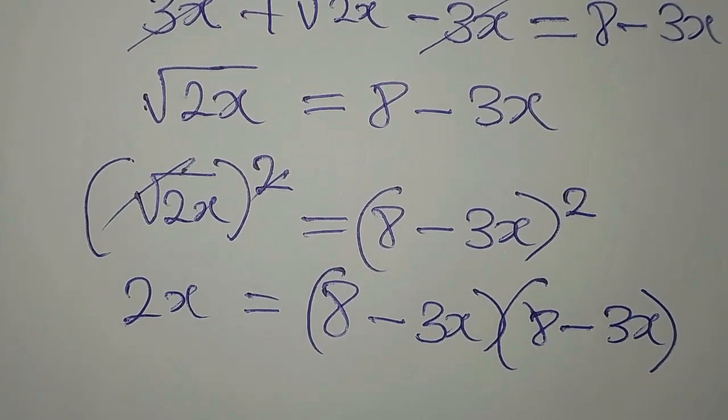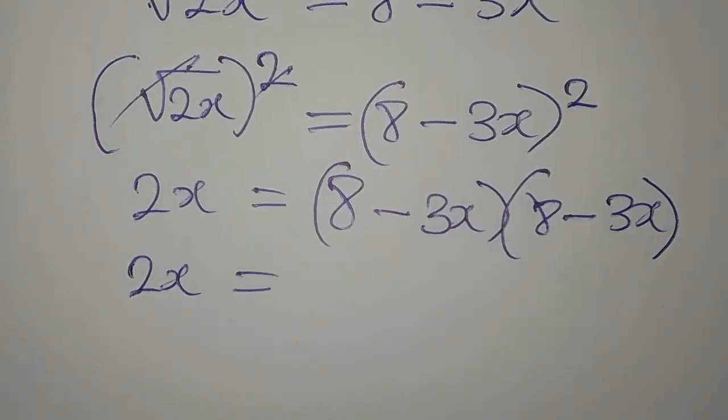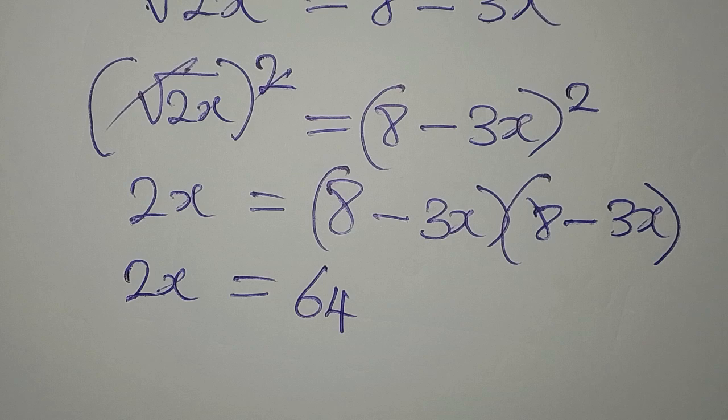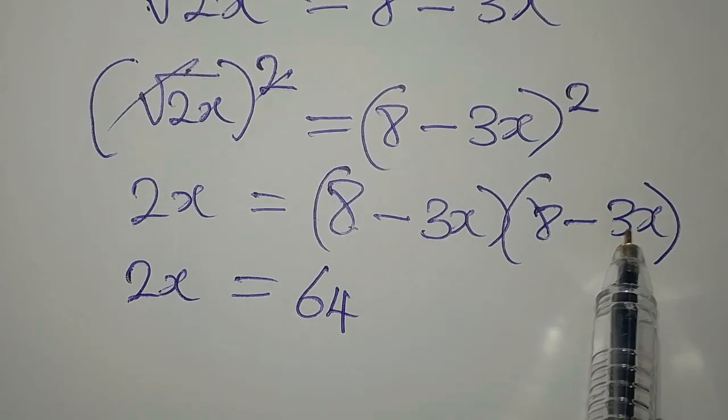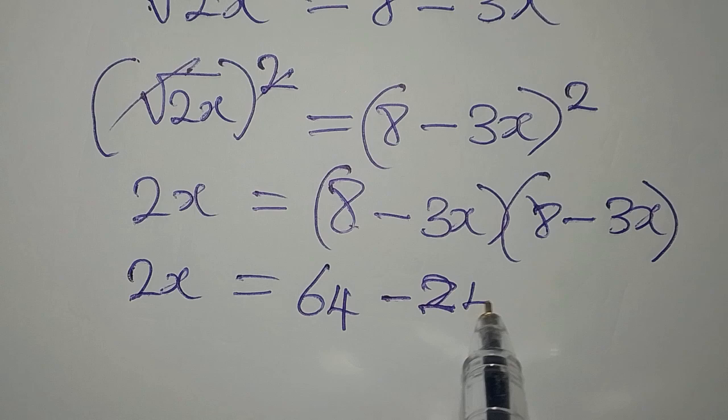So we have 2x equal to 8 times 8 is 64, then 8 times minus 3x gives us negative 24x.